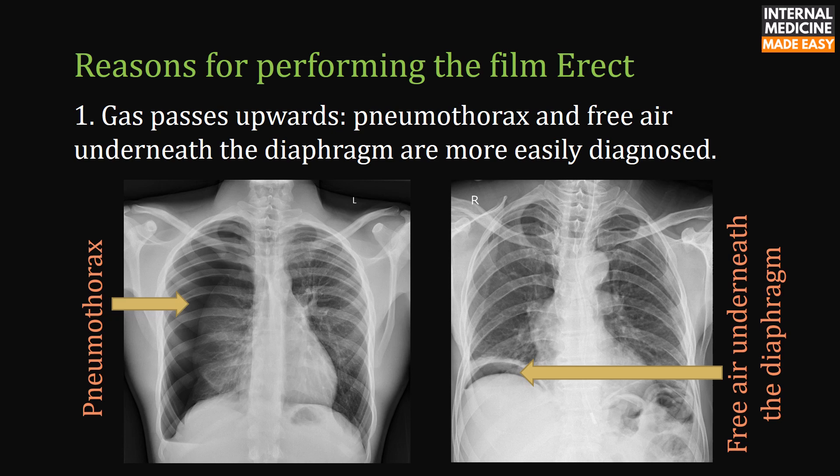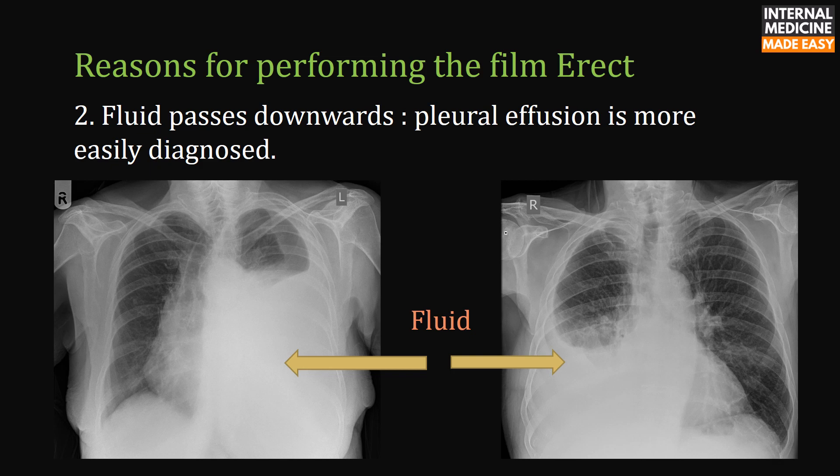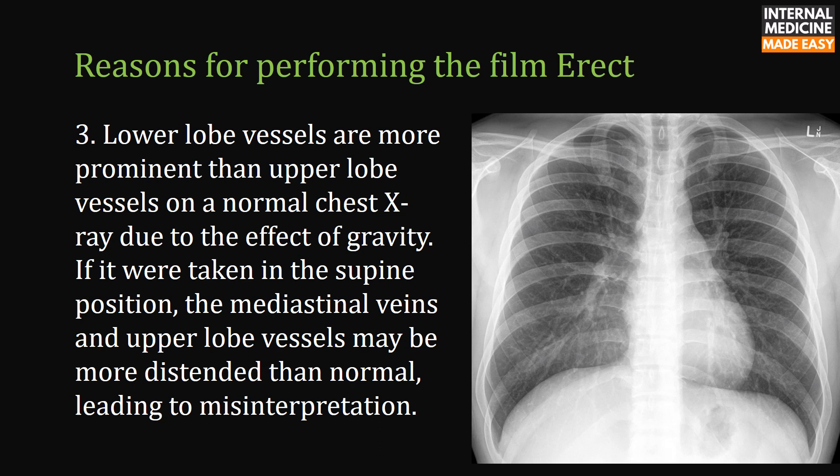Reasons for performing the film erect: First, gas passes upwards so pneumothorax and free air underneath the diaphragm are more easily diagnosed. Second, fluid passes downwards so pleural effusion is more easily diagnosed. Third, lower lobe vessels are more prominent than upper lobe vessels on a normal chest x-ray due to gravity. If taken in the supine position, the mediastinal veins and upper lobe vessels may be more distended than normal, leading to misinterpretation.